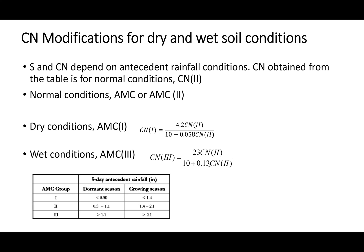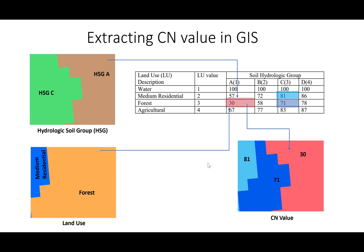That is the curve number method and how we get curve numbers using the table. In GIS, what we typically do is obtain soil data — for example, an area might have two hydrologic soil groups such as A and C. On this soil type we overlay the land use data. For instance, we may have two land use types: forest and medium residential. We overlay these two datasets and look up what the curve number is for a given soil condition and land use combination.